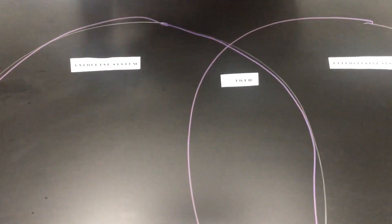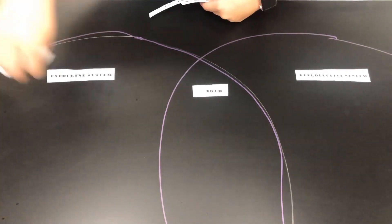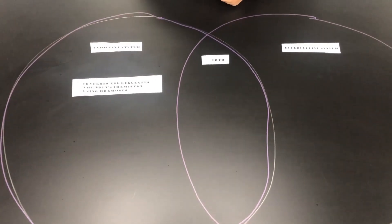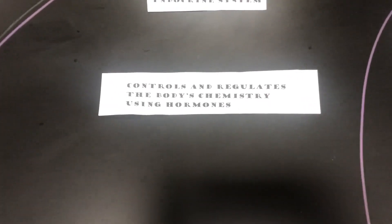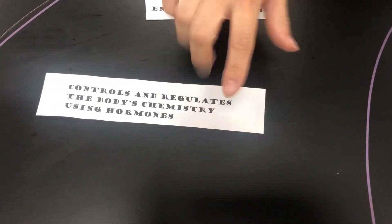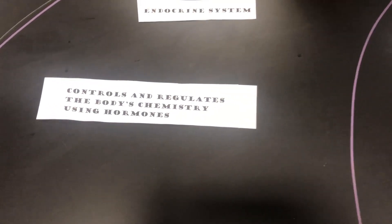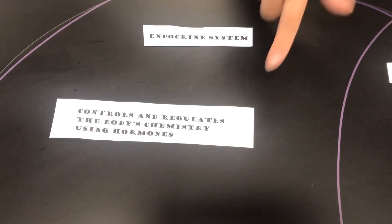First, with the endocrine system, we can say that the endocrine system controls and regulates the body's chemistry using hormones. That's not part of the reproductive system, so it only falls under the endocrine system.